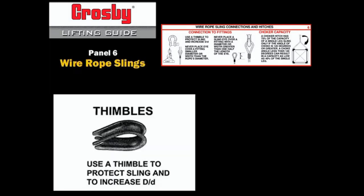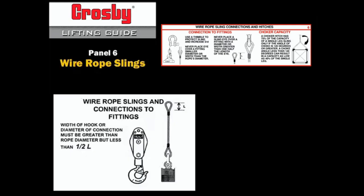The use of a wire rope thimble will provide the best protection to the eye of the sling. In many cases, the use of a thimble is not feasible. Do not force eyes over hardware. Make sure that the width of the hook or the diameter of the fitting is no bigger than one half the length of the eye.